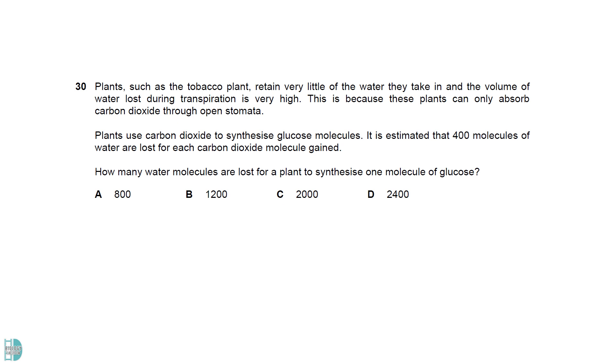A glucose molecule contains 6 carbons. So, 6 carbon dioxide are needed to make a molecule of glucose. Multiplying 6 carbon dioxide with the 400 molecules of water loss due to each one of them gives us 2400 in total.